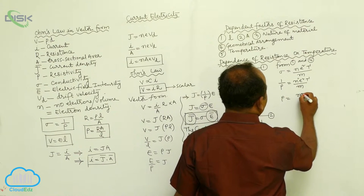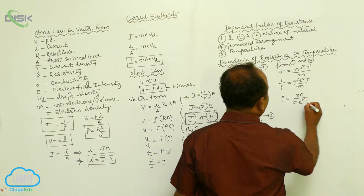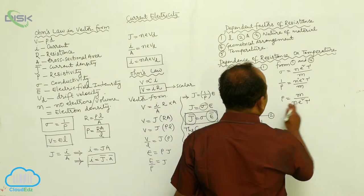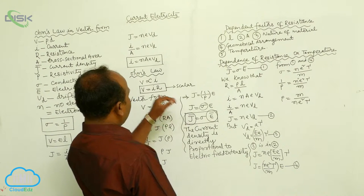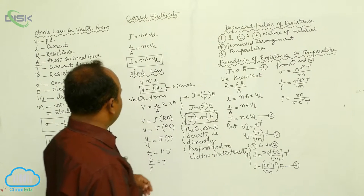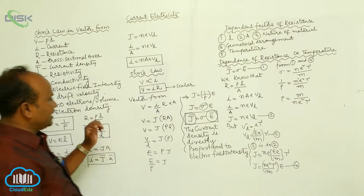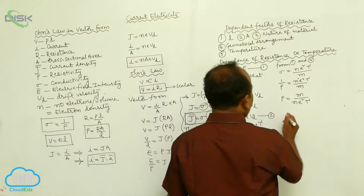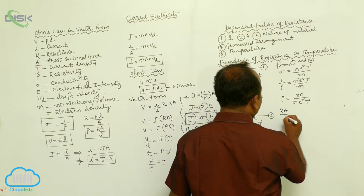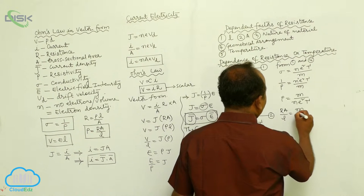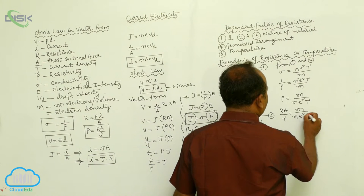Therefore rho is equals to m by n e squared into tau. Rho is also equals to R A by L. Therefore, R A by L equals m by n e squared into tau.